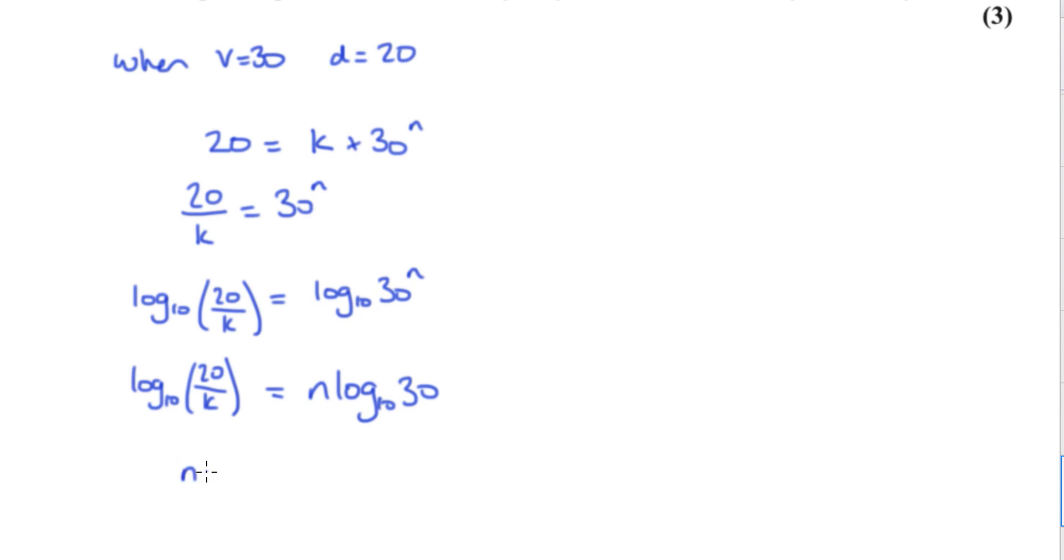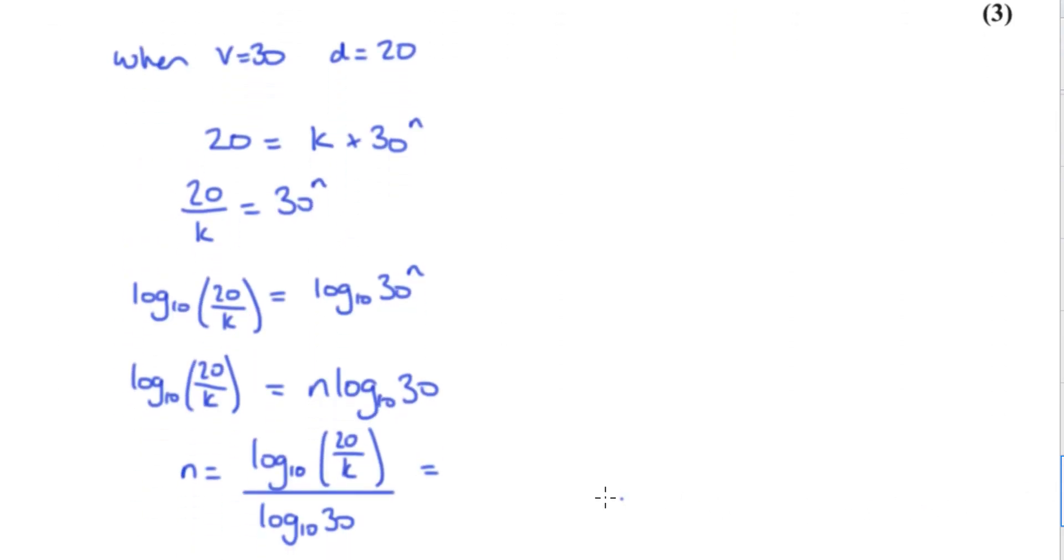So n is going to equal log to the base 10 of 20 over k divided by log to the base 10 of 30. Type all that in, and I get, how many significant figures? I'm guessing three. Yeah, 2.08.